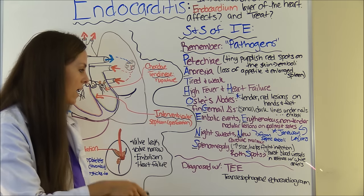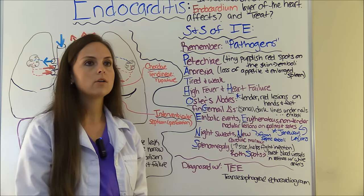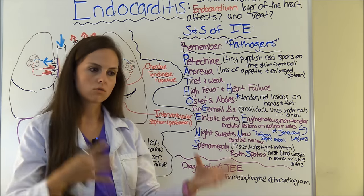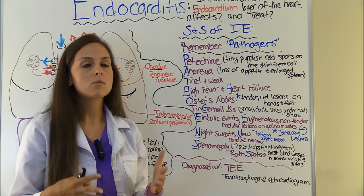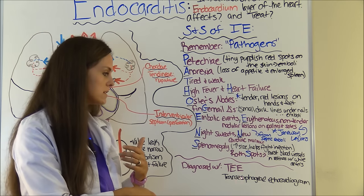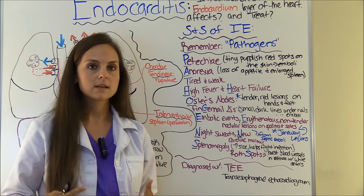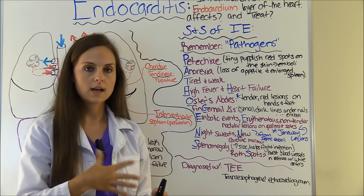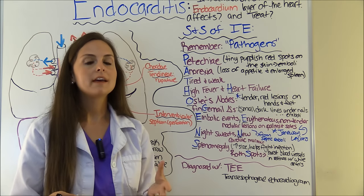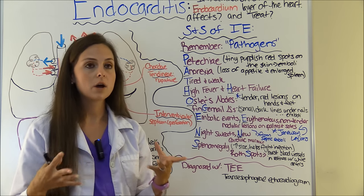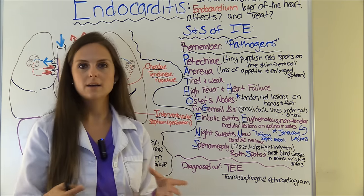How is infective endocarditis diagnosed? You'll get blood cultures to see what's growing in the blood, which helps determine what type of antibiotics to use. A great test is a transesophageal echocardiogram, or TEE. Unlike a thoracic echocardiogram done over the chest, the TEE involves sticking a probe down through the esophagus to look at the back of the heart, where you can actually see the heart valves opening and closing and identify any vegetations — including where they're located and how big they are.